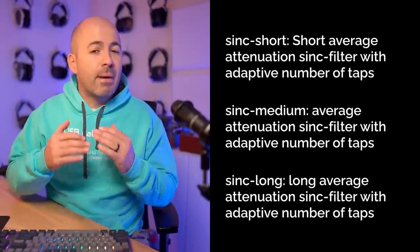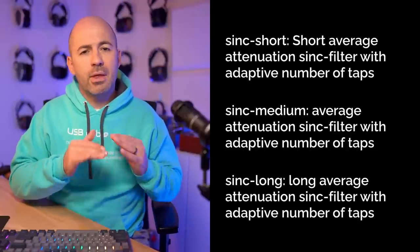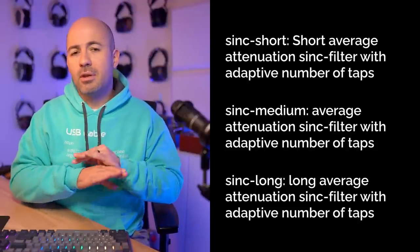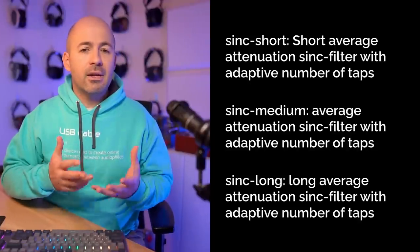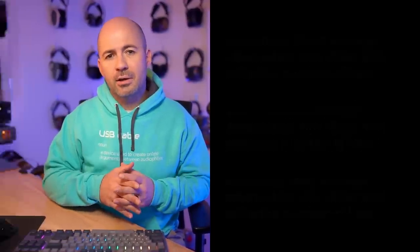I started with the Gustard receiving the signal with no upsampling at all, then switched on the Sync Short filter. Going from the non-upsampled sound to the Sync Short filter, I was getting a slightly crisper sound with slightly better separation. The difference wasn't massive — it wasn't a complete transformation — but the Sync Short filter was definitely a little cleaner, crisper, and with a bit more separation.